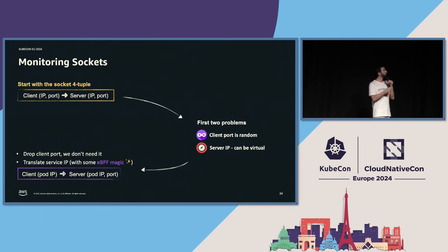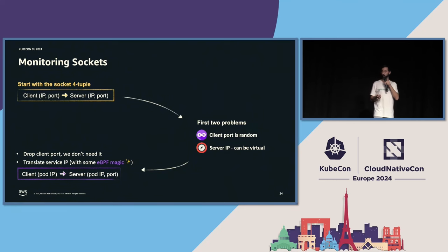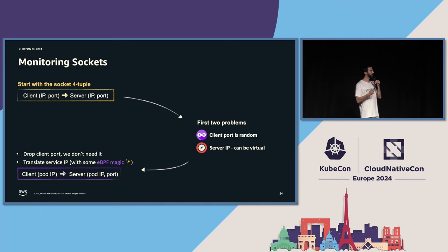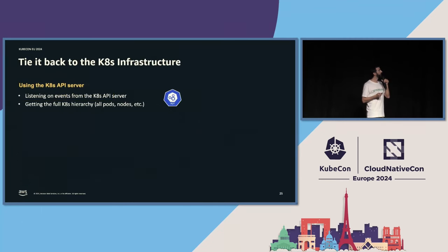eBPF is situated at the best junction possible for observing kernel operations — observing the NAT translation that Kubernetes uses to figure out what the server IP actually represents and translating it to an actual pod IP behind the scenes.